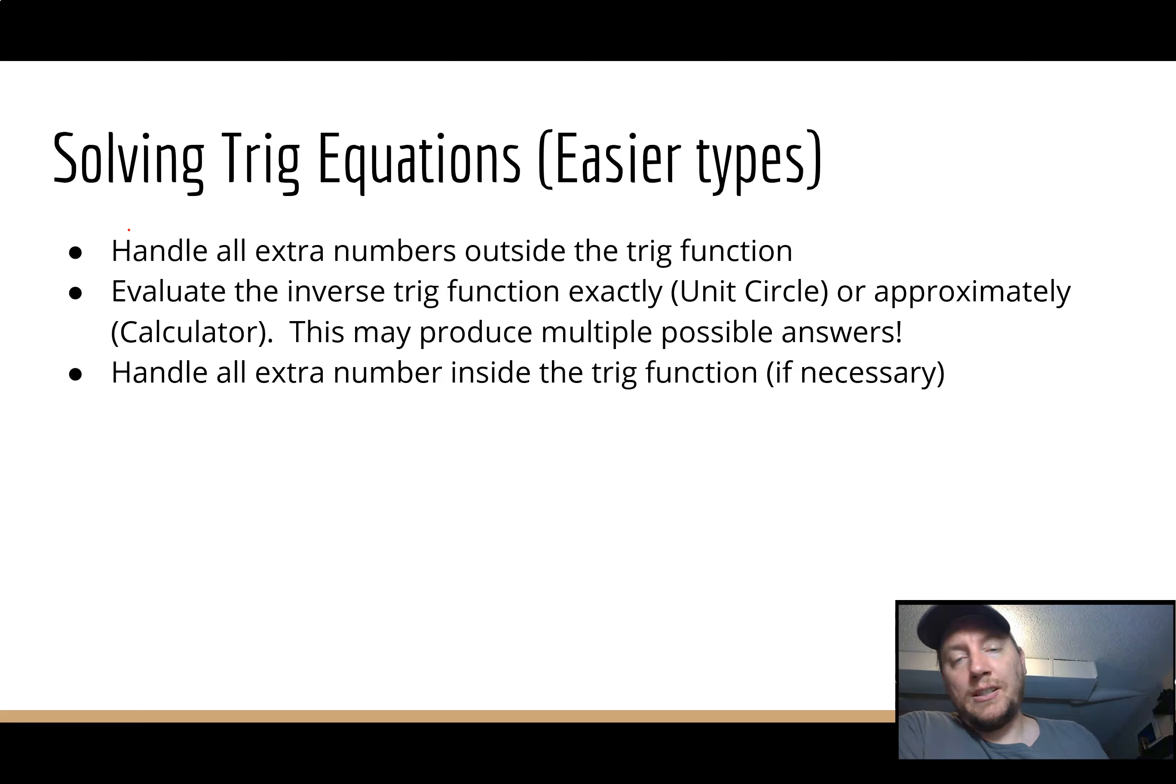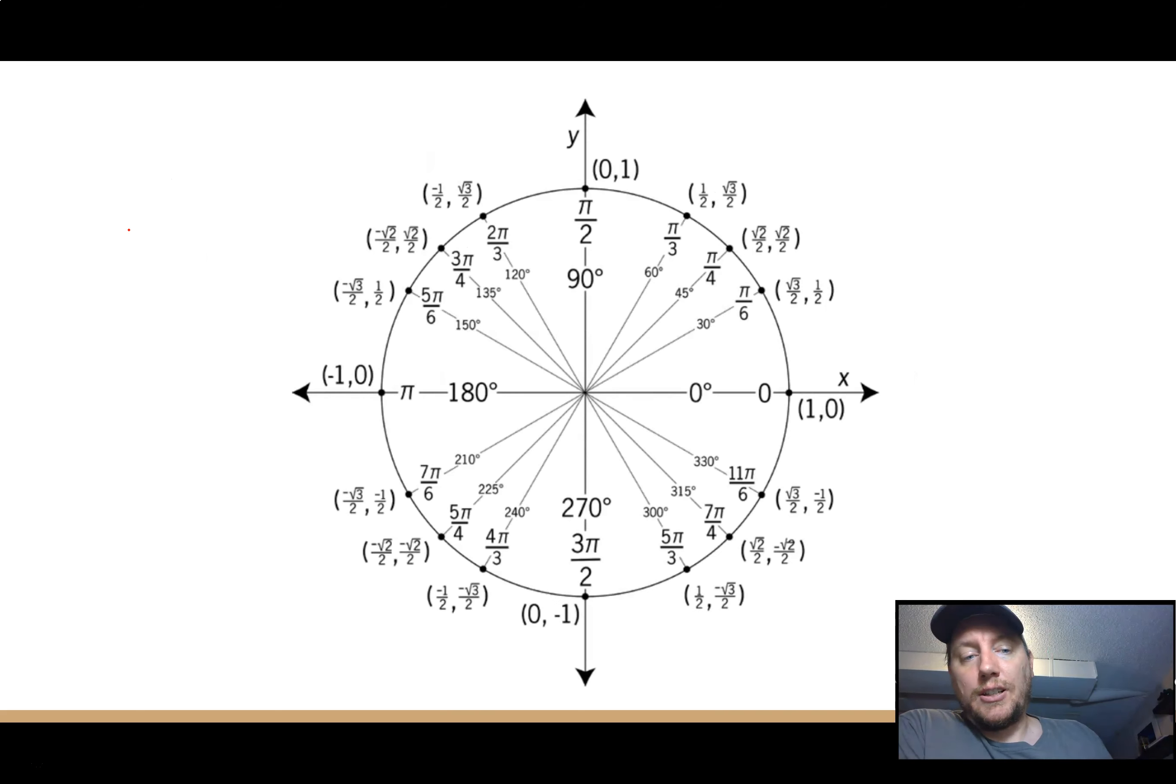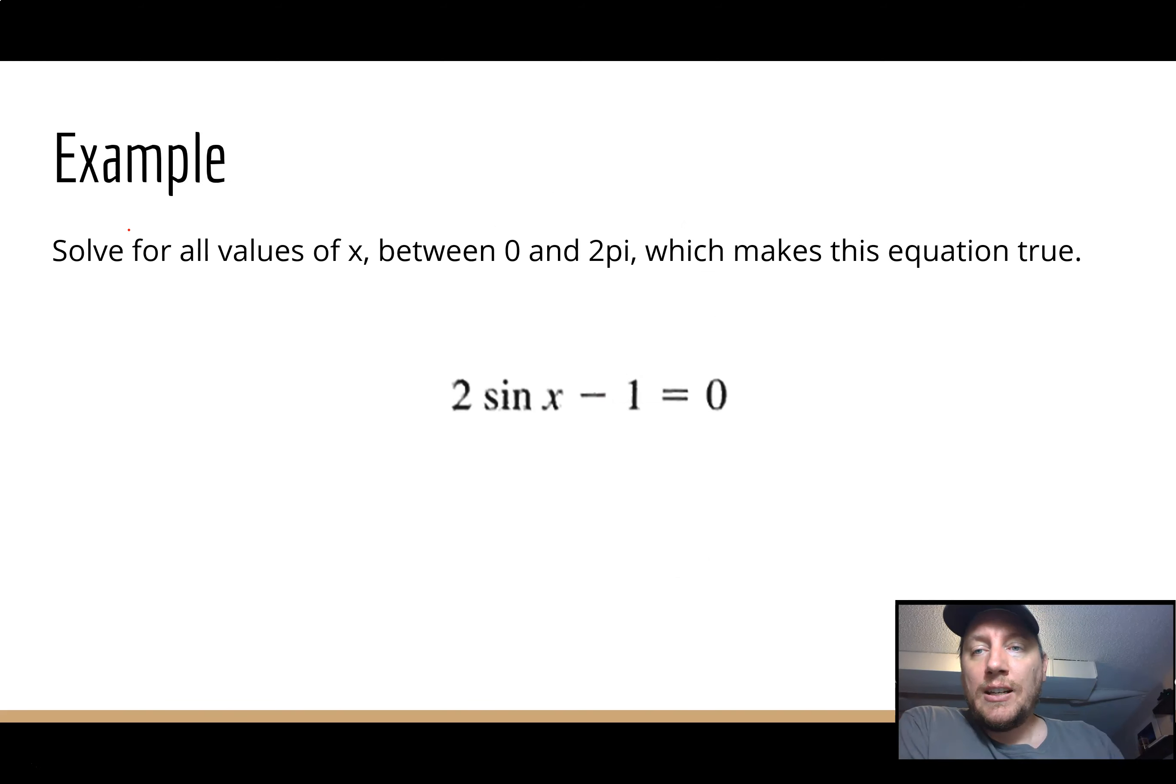Then handle all extra numbers inside the trig function if necessary. So let's jump right in. Just throw a unit circle on here so I can access it and show you guys what I'm looking at. And here's our good example: solve for all values of x between 0 and 2π, which makes this equation true: 2sin(x) - 1 = 0.